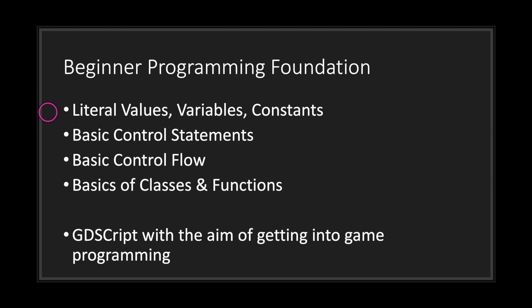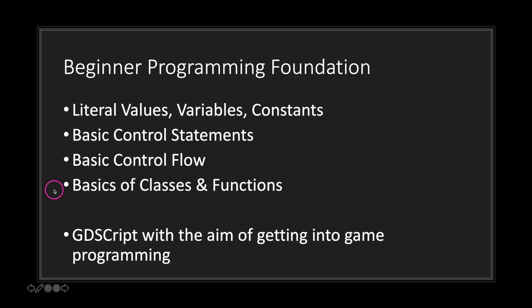In this series I want to help you get the basic foundations as a new programmer. The basic foundations will include literal values, variables, and constants, along with basic control statements and how control flow works, plus the basics of classes and functions. If you can get these four basics down, switching to other programming languages is quite simple, because these four topics are similar no matter what programming language you use. Try your best to understand these four basic bullet points intimately, because that is your beginner foundation, and with that you can easily switch to a different programming language.